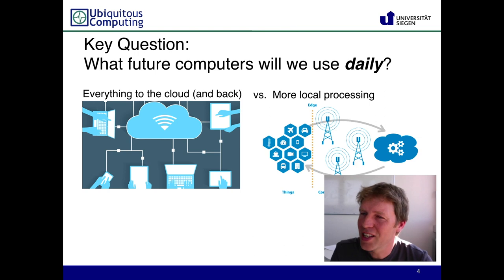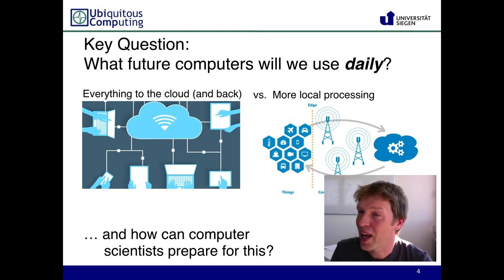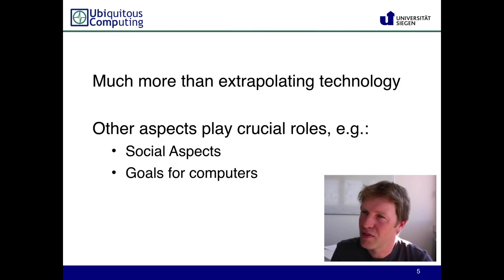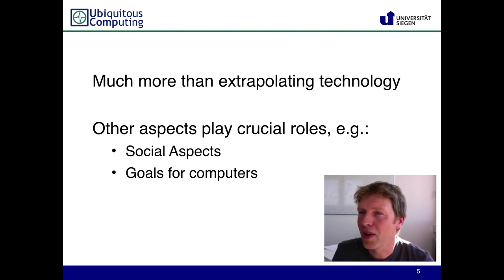That is why we ask in this course the main question: how can we as computer scientists prepare for this future that is very uncertain, yet has things we can perhaps predict? We won't just look at how technology is advancing — through Moore's Law and other trends we know technology is advancing at a really rapid, exponential pace.